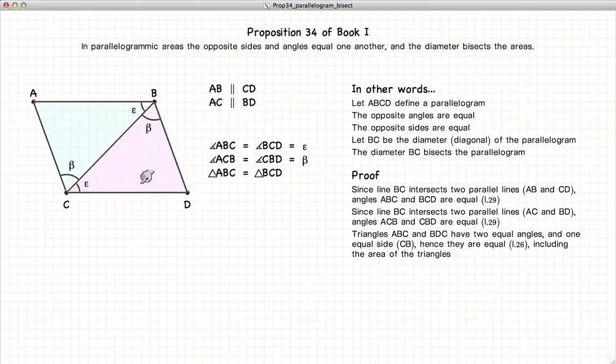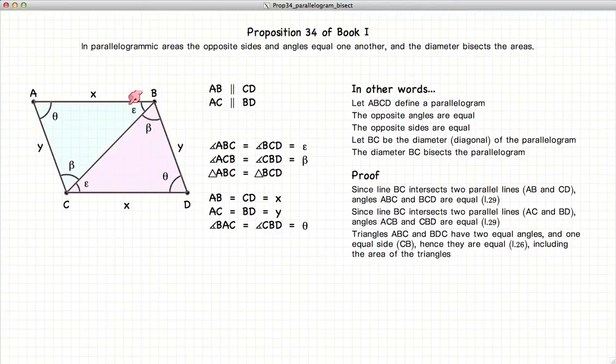Because these two triangles are equal in all respects, we also have that the angle BAC is equal to BDC, or that these two angles, which are opposite each other, are equal, and that the lines AB and CD are equal in length, and the lines AC and BD are also equal in length.